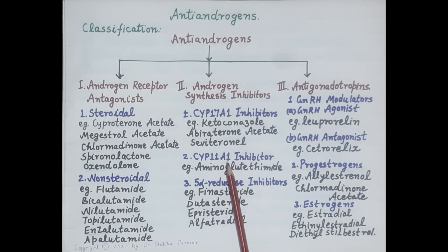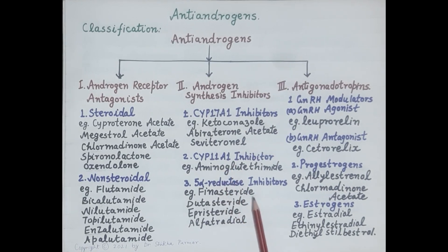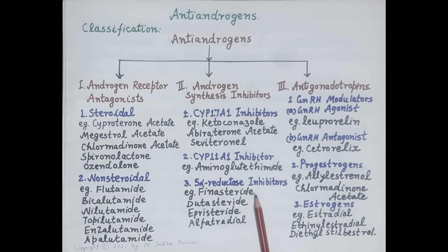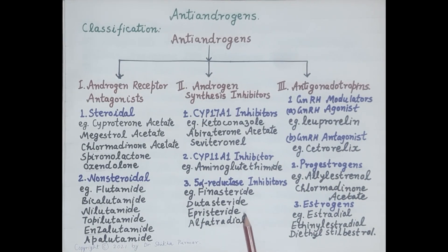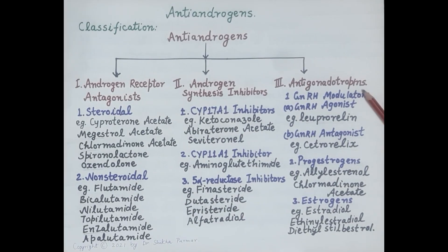The second type of androgen synthesis inhibitors are CYP11A1 inhibitors — for example, aminoglutethimide. The third type are 5-alpha reductase inhibitors, which inhibit conversion of testosterone to its more potent biometabolite dihydrotestosterone, thereby reducing synthesis of DHT. Examples include finasteride, dutasteride, and alfatradiol.